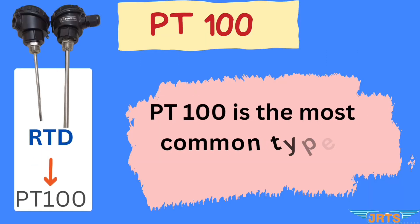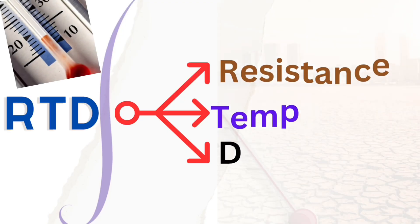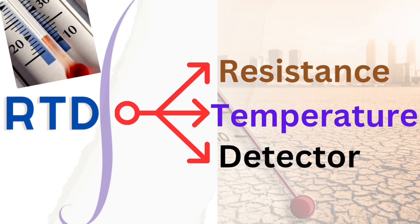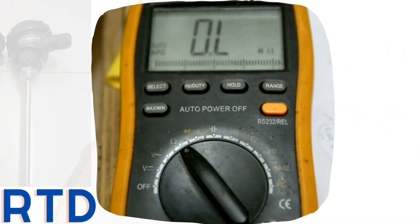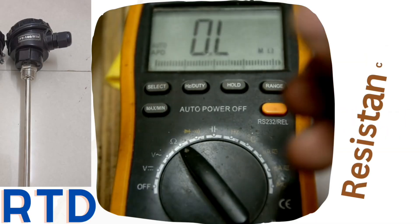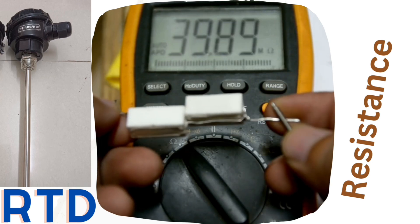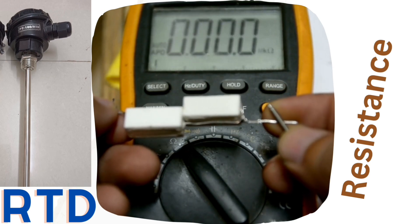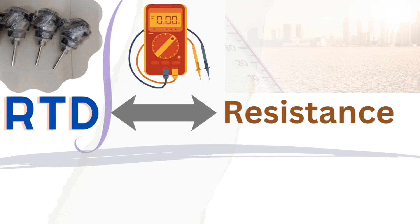PT100 is the most common type of RTD sensor. RTD stands for resistance temperature detector. The output of an RTD sensor is resistance.